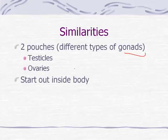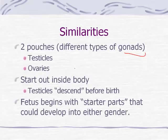In both cases, these testicles and ovaries do start out inside the body. The ovaries stay inside the body throughout a female's life, whereas the testicles will eventually descend just before birth. When the fetus is first starting to develop, it starts out with what we would call starter parts, and they are not male or female at that point in time when you look at them. You wouldn't be able to tell the exact gender just by looking at the parts.